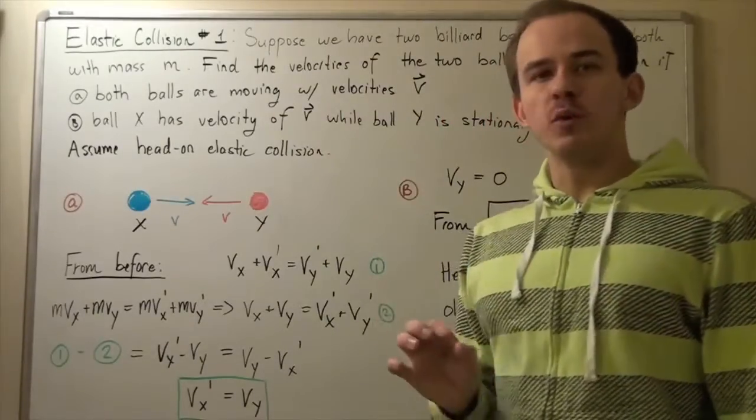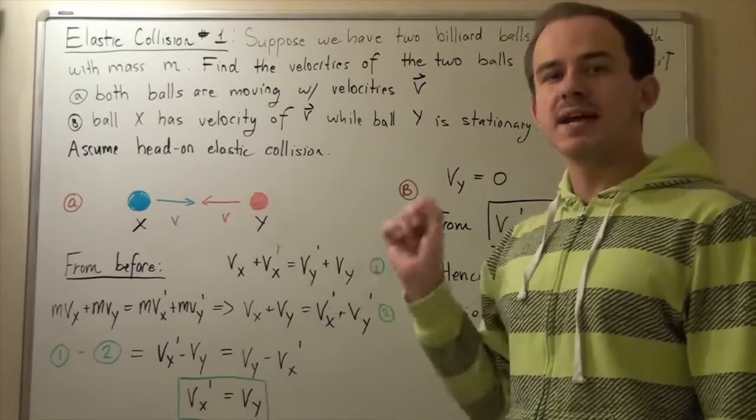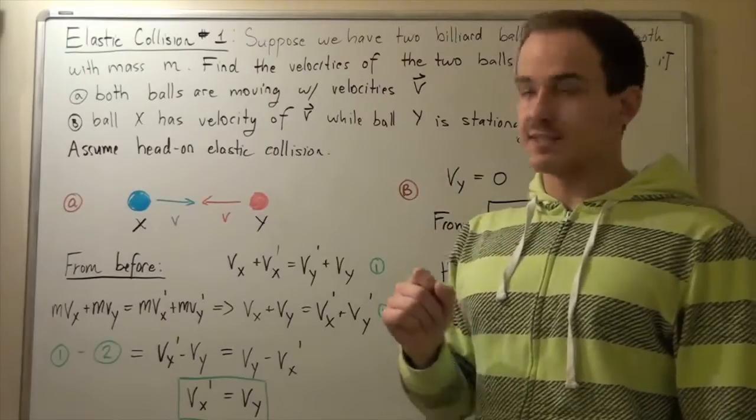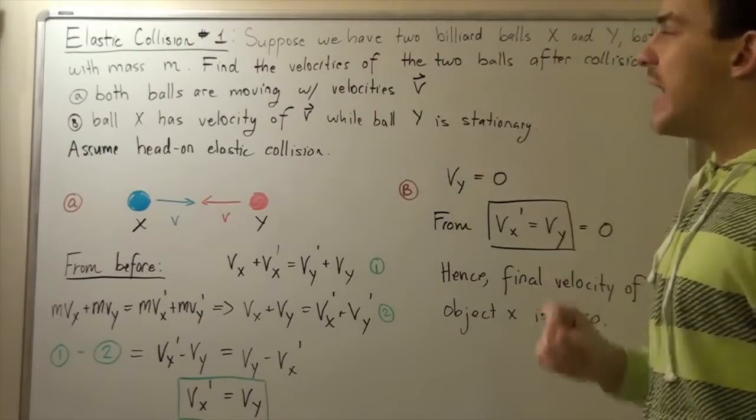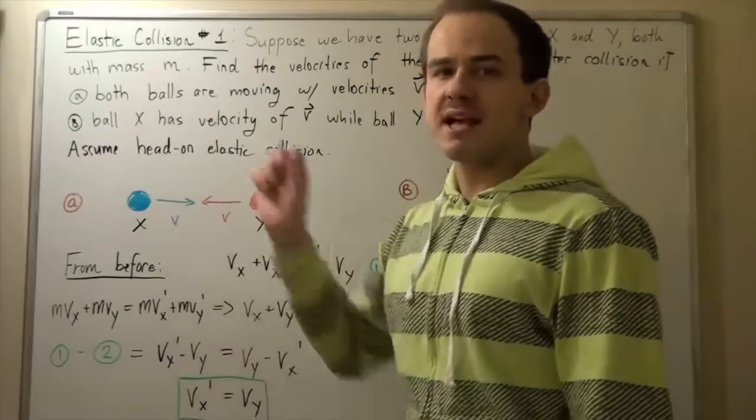Let's examine the following example involving elastic collisions in one dimension, along the x-axis. Suppose we have two billiard balls, X and Y, both having the same mass m.